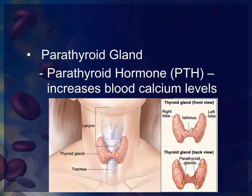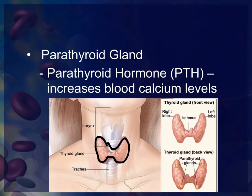Note the location of the thyroid gland. It surrounds the neck region around the windpipe — the trachea — and is located just below the larynx, or the thyroid cartilage that surrounds the larynx, which is the Adam's apple.